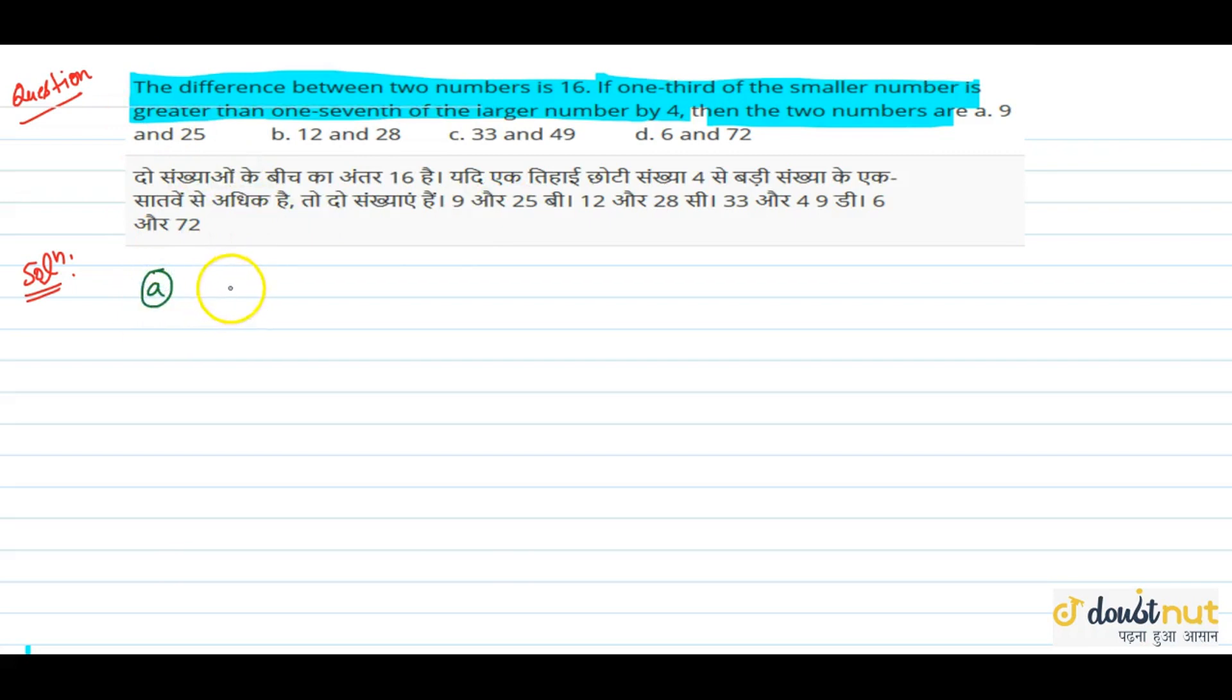The first option is 9 and 25. Now the condition is the difference between two numbers is 16. Between 25 and 9, the difference is 16. So the first thing we will see is that the difference is 16.